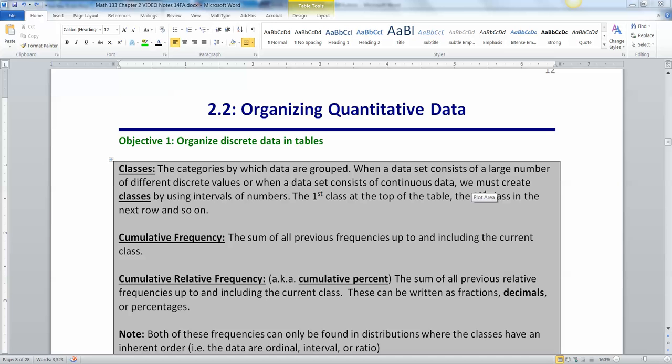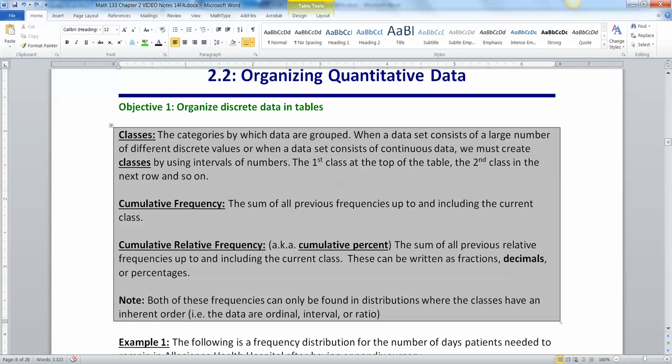First thing you got to be able to do is break up quantitative data into classes. So we're going to group data by categories and of course because it's quantitative we can group it in rank order from lowest to highest. The first class will be at the top of the table, the second class is the next row and so on, and each class will get progressively higher in numerical value.